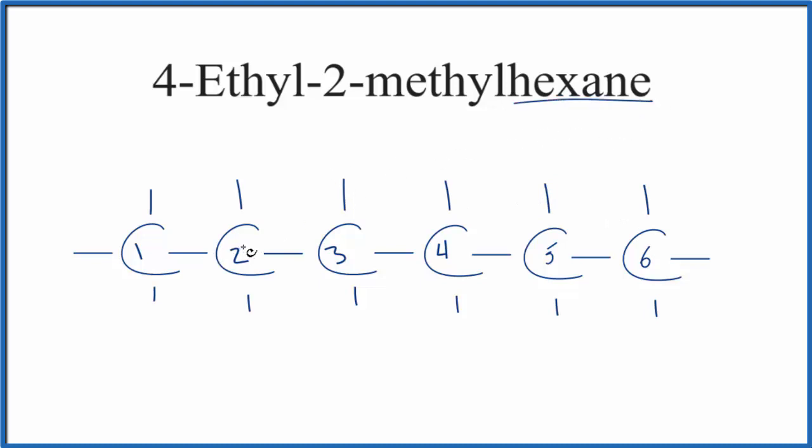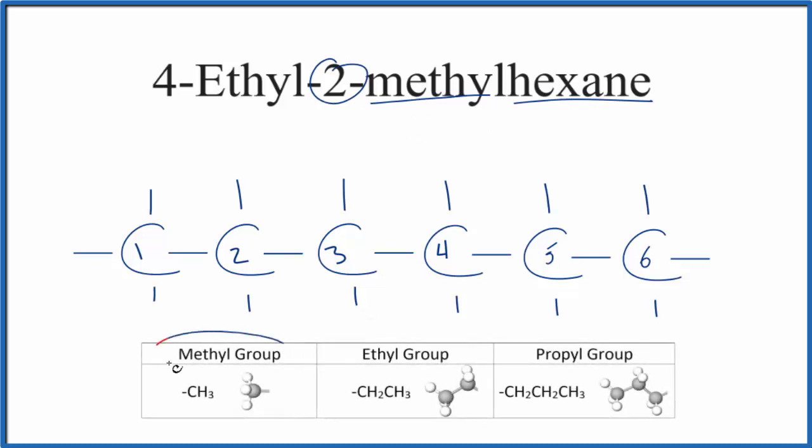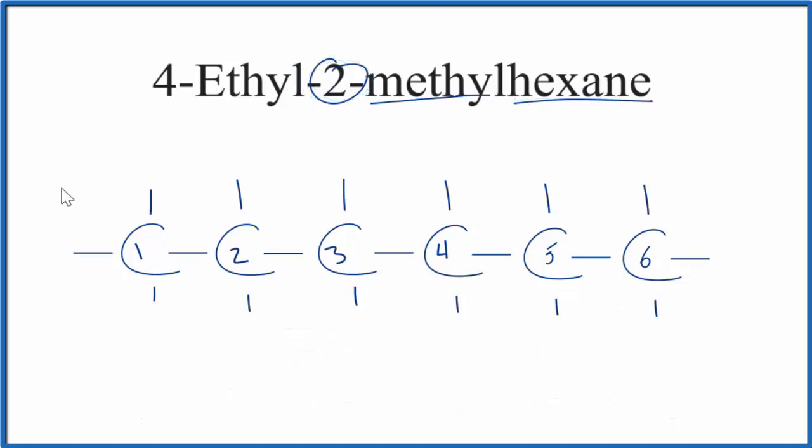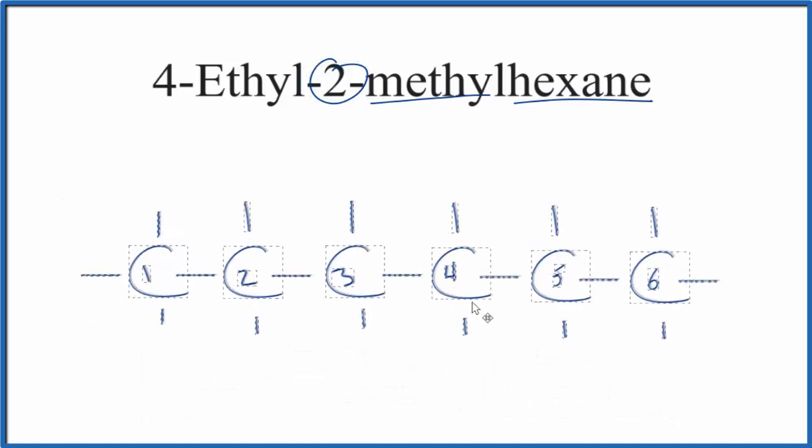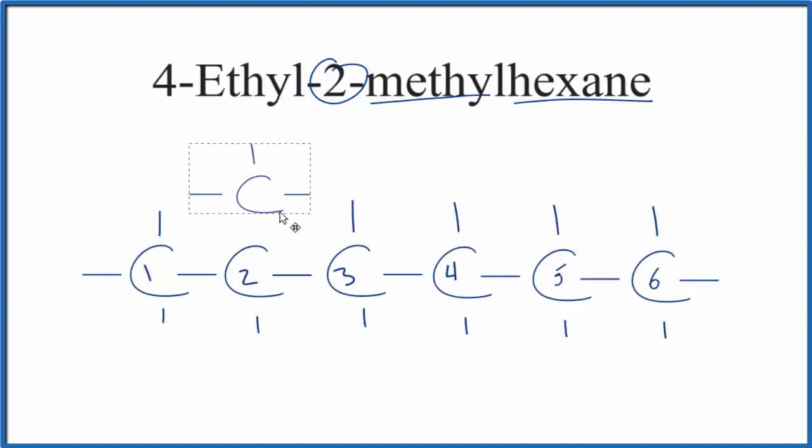On the second carbon, carbon-2, we need to put a methyl group. The methyl group is CH3 - a carbon with three hydrogens. We put that on the second carbon of our hexane, replacing the hydrogen there with the methyl group. So we have 2-methylhexane now.